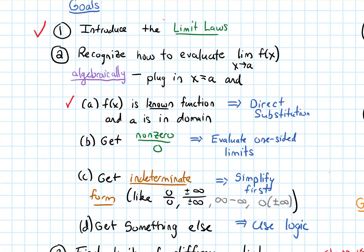So in terms of our goals for this section, we've talked about how to handle case two: when we get a non-zero over zero result when plugging in for a limit, our strategy is to evaluate the one-sided limits.